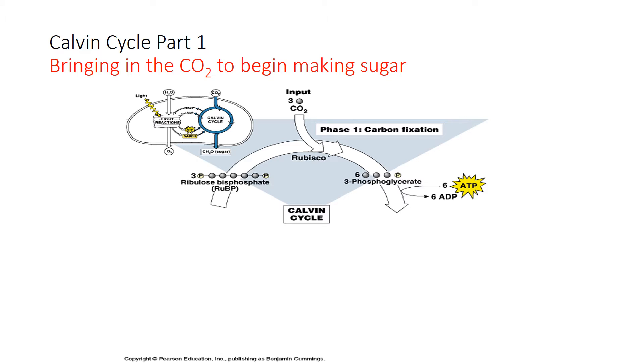What is going to be coming into the Calvin cycle? We can see that we're going to have carbon dioxide coming into the Calvin cycle. So we're going to put three molecules of carbon dioxide into the Calvin cycle. And where is the carbon dioxide coming from? It's coming from the atmosphere.